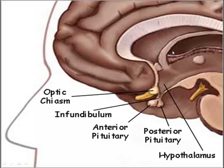The hypothalamus is a portion of the brain that has many various functions. One of its most important functions is to link the central nervous system with the endocrine system of the body.